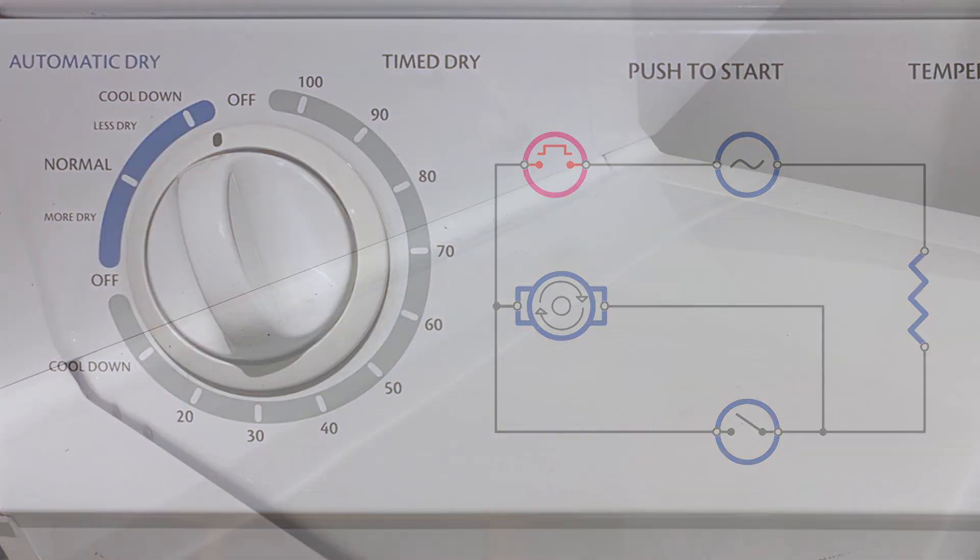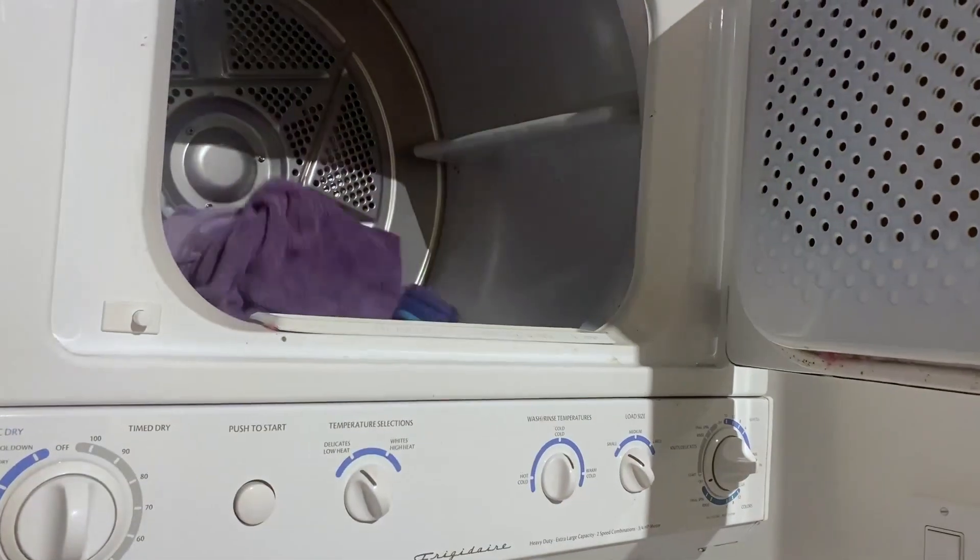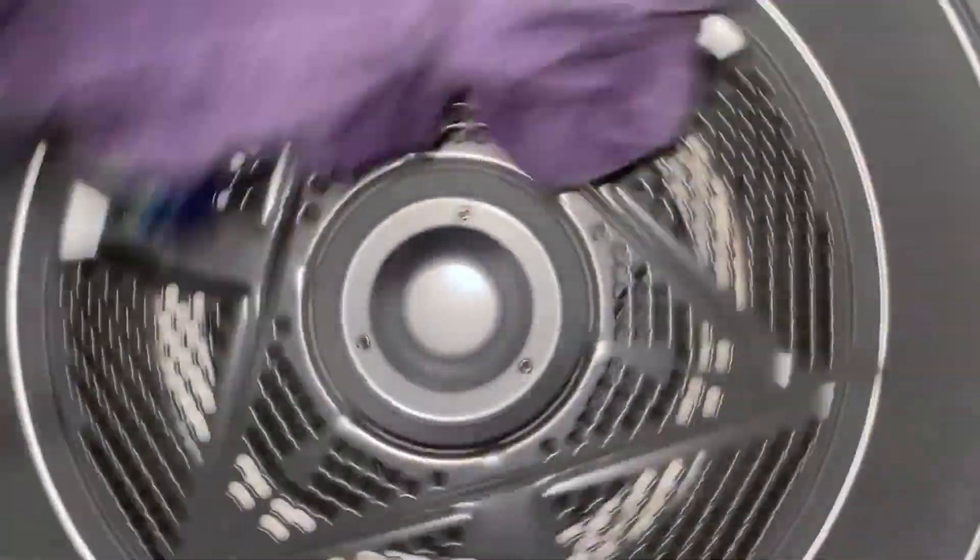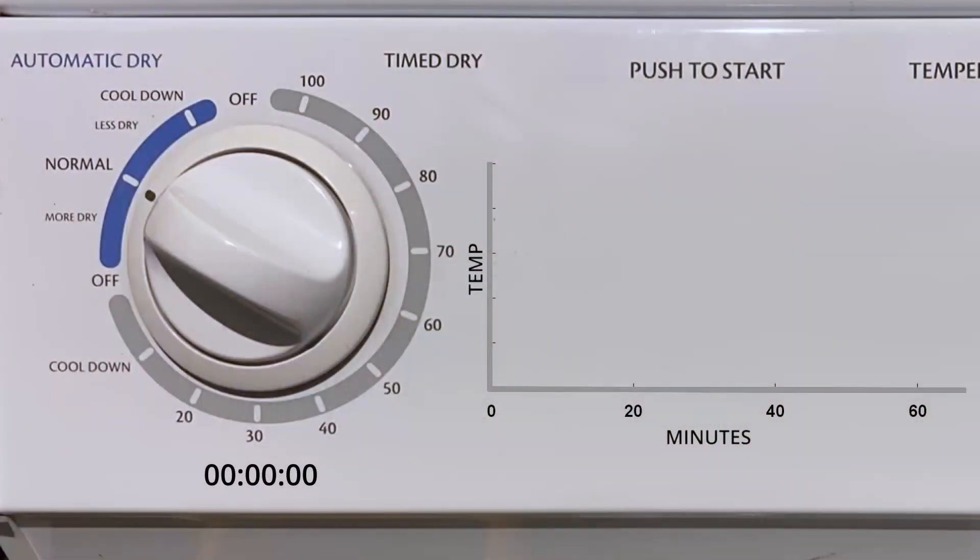To help us understand how this method manages to end the cycle just when the clothes get dry, we'll run successively larger loads through the auto dry mode and analyze the results. We'll start with this one towel again.